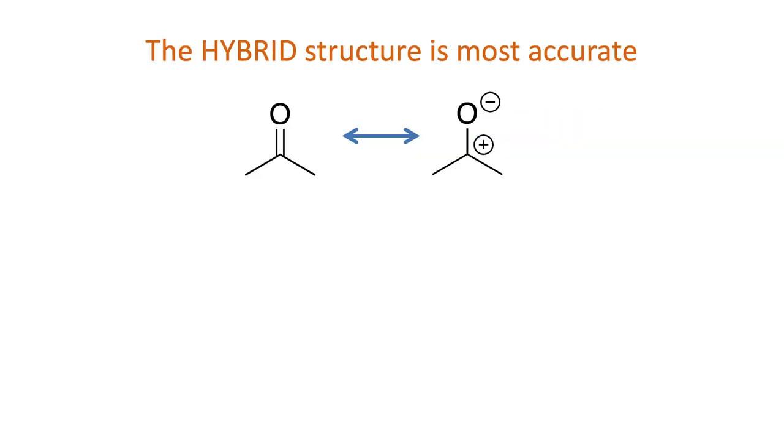Because neither of these structures is the true representation of the molecule, the better one is the resonance hybrid. To draw the hybrid, we first draw all the parts that have not changed between the two structures. Second, draw all the lone pairs that remain on atoms at all times.